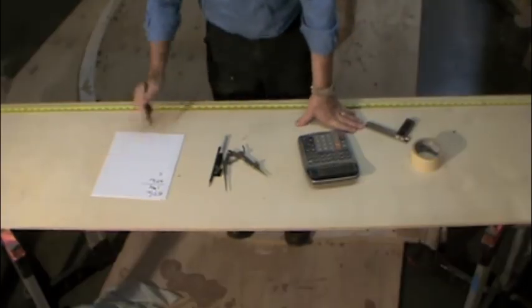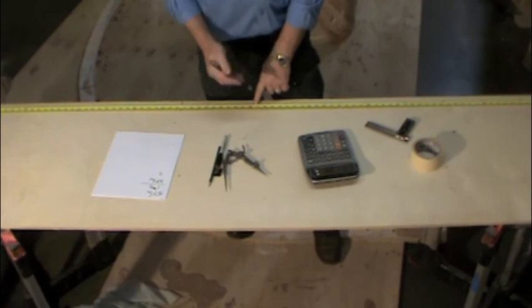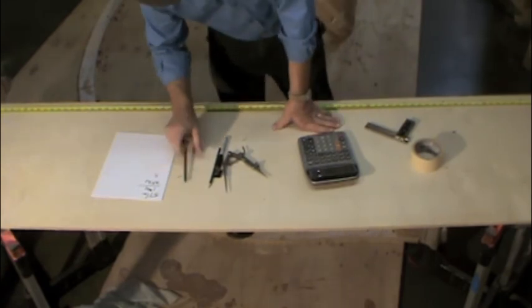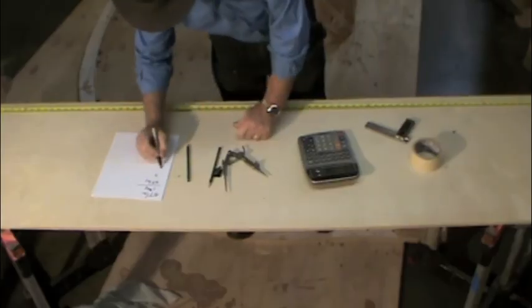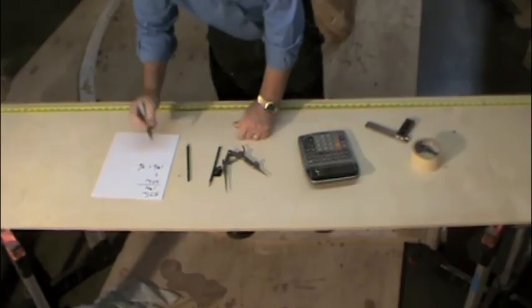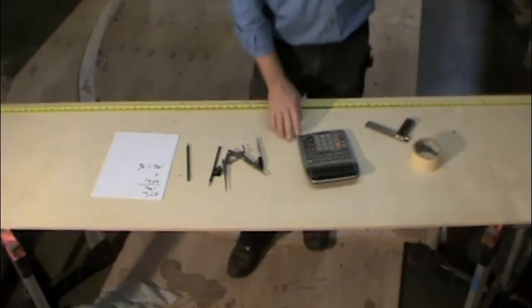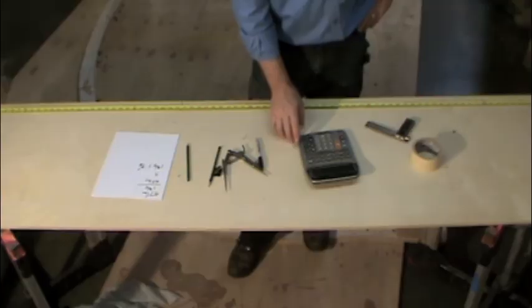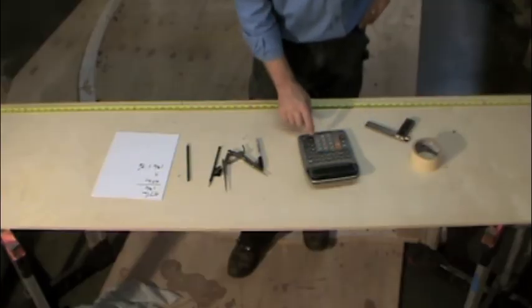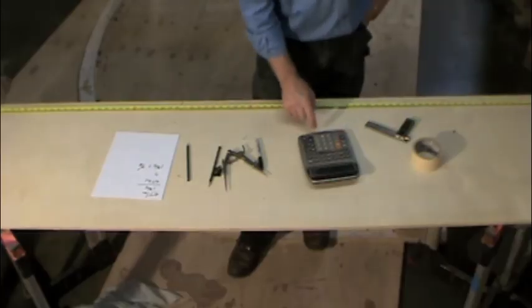What we do now is we want to set this back half the width of one baluster to get all our center lines. So on an inch and three-quarter, half of that is going to be seven-eighths. The easiest way to go about doing that is to enter a negative seven-eighths minus seven-eighths plus recall memory plus equals.